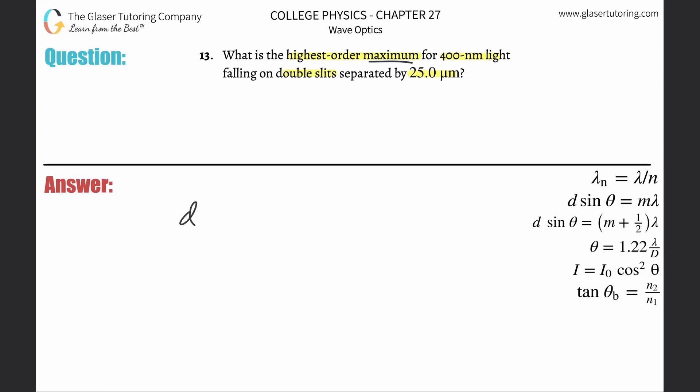So this is going to be the distance between the double slit multiplied by the sine of the angle between the slit and that m-th order maximum, and then multiplied by lambda.